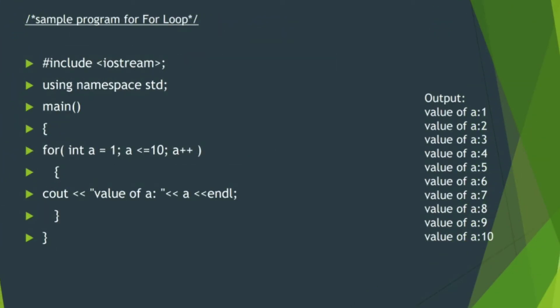Now the sample program will be observed. Hash include iostream, using namespace std, and the main function will be used. For keyword is used, with data type int, a equal to 1. Ending position is a less than or equal to 10. Increment operator is a++, which will increase the value one by one. Then cout will print the value of a.